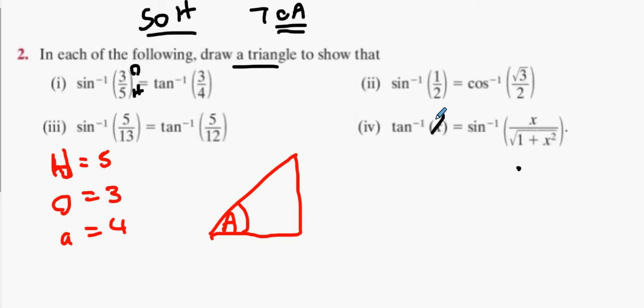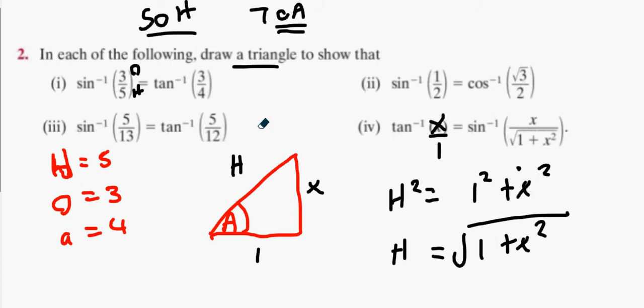I would say tan inverse X over 1. So what's opposite? What's the adjacent? We call this H for argument's sake. What's H squared equal to? 1 squared plus X squared. And when we agree that that's 1 plus X squared, what can I do with the square on H? Square root both sides, what happens? Now you have your hypotenuse, don't you? What's your hypotenuse? 1 plus X squared.